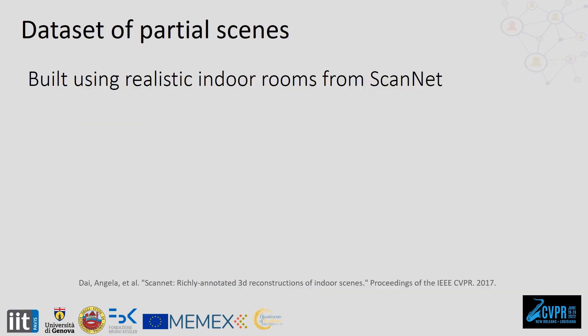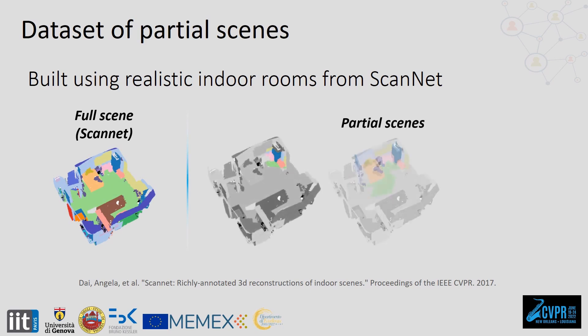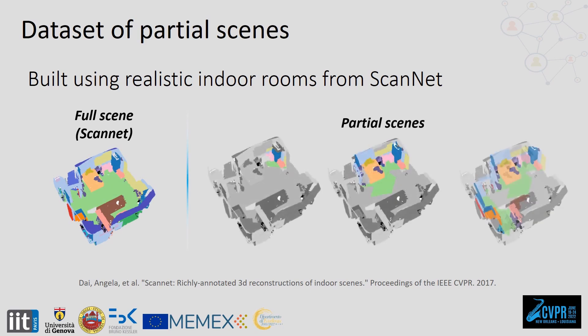We build a dataset of partial scenes to evaluate our approach on this new task. The dataset features realistic indoor rooms from ScanNet. Starting from the full scene in ScanNet, we create partial scenes where only a part of the environment is observed. By building the dataset from the full scene, we have the semantically annotated point cloud for the visible part of the room and the ground truth position of the objects in the unobserved part.